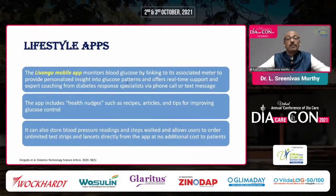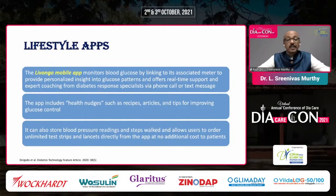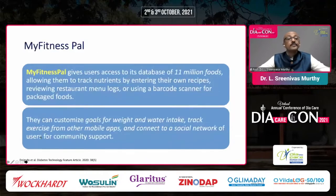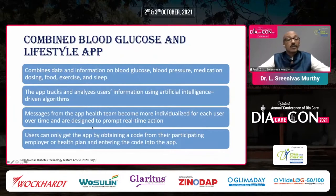The LiveOnGo mobile app monitors blood glucose by linking to its associated meter, providing personalized insights into glucose patterns and offering real-time support and expert coaching from diabetes specialists via phone call or text message on a case-by-case basis. It includes health nudges such as recipes and articles, stores blood pressure readings and steps walked, and allows users to order unlimited test strips and lancets directly from the app at no additional cost. MyFitnessPal gives users access to a database of about 11 million foods with nutrient content, nearby restaurants, and barcode scanning for calorie details. Combined blood glucose and lifestyle apps using artificial intelligence to guide further management are among the most successful.